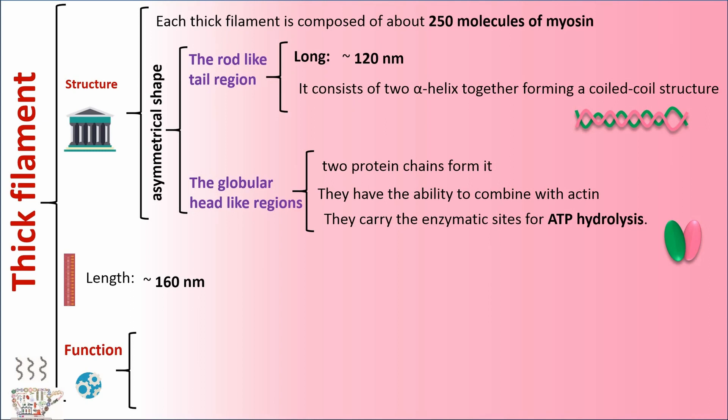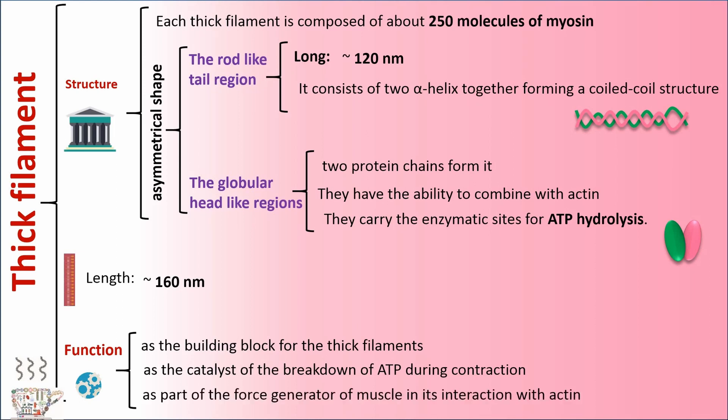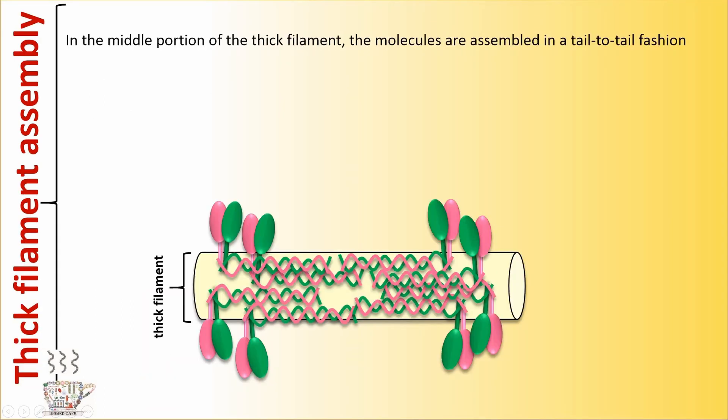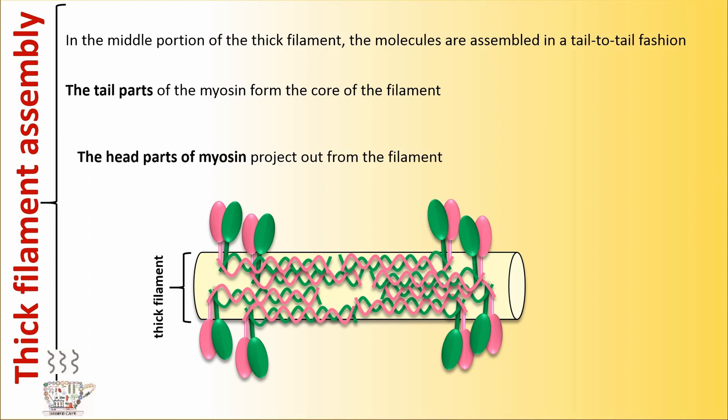Myosin plays a role as the building block for the thick filaments, as the catalyst of the breakdown of ATP during contraction, and as part of the force generator of muscle in its interaction with actin. In the middle portion of the thick filament, the molecules are assembled in a tail-to-tail fashion. The tail part of the myosin forms the core of the filament, and the head parts of myosin project out from the filament.